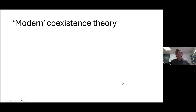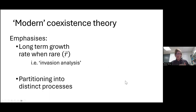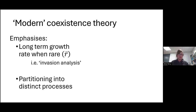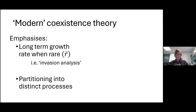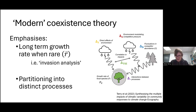Within that, we have modern coexistence theory, which takes a particular angle. In many ways it's better described as a framework than a particular theory. It's an approach characterised by an emphasis on invasion analysis, measured by the sign of the long-term population growth rate when rare. It's frequently coupled with some kind of partitioning — whether that's into niche and fitness differences, or different processes by which variability can influence invasion. This focus on the capacity to invade draws focus away from population dynamics, but allows analysis and comparison of all kinds of complicated processes in one go.